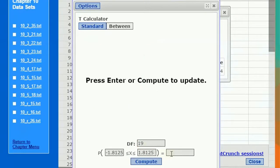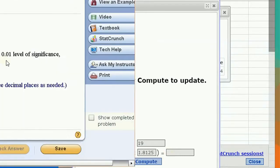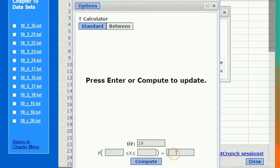We would have 19 degrees of freedom. We're going to have an alpha level of 0.01, that means we're going to have a probability of 0.99 in between.